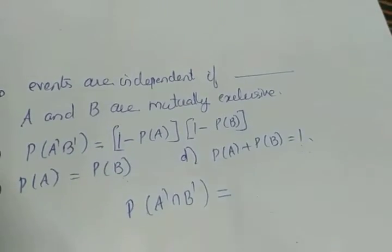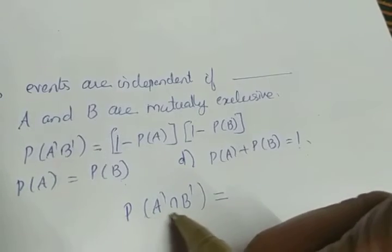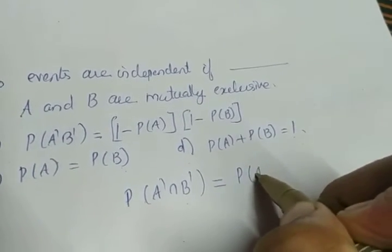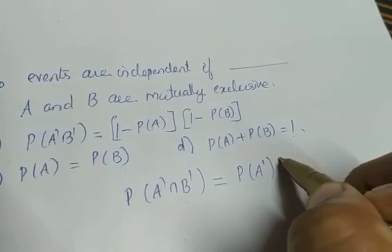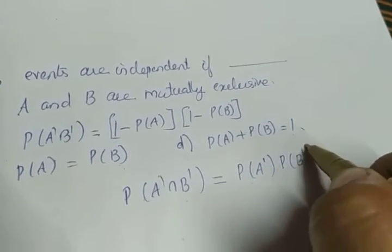And if A and B are independent events, we are very sure that A dash and B dash are independent. Isn't it? So that P(A' ∩ B') can be written as P(A') into P(B').